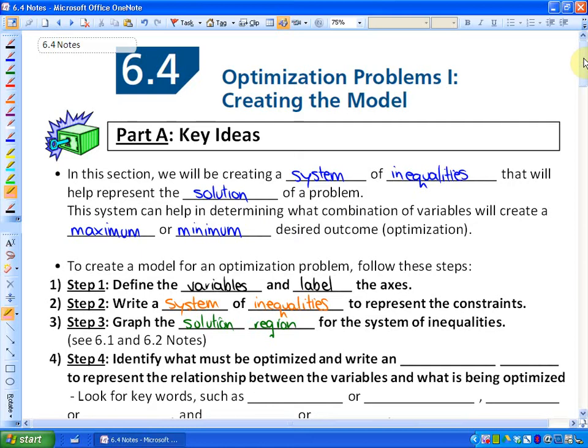So the beginning part is going to be the same. So in this section, what we're going to be doing is, much like we've done before, creating a system of inequalities that represent a solution of a problem. So word problems, creating a system that could represent a whole bunch of possible combinations.